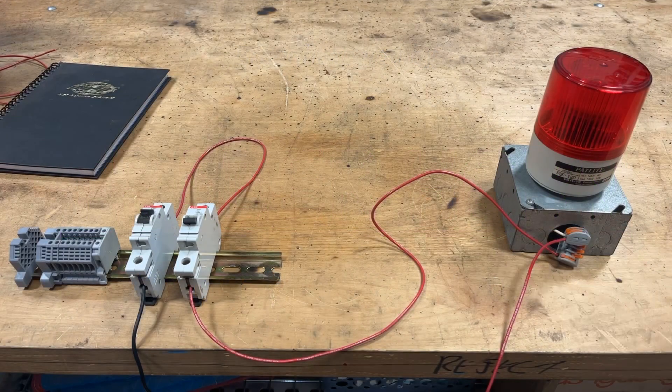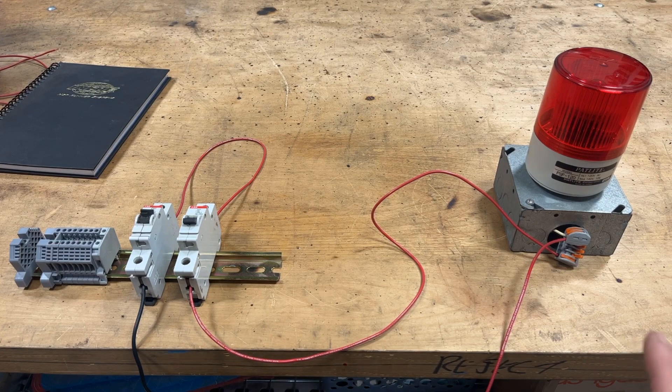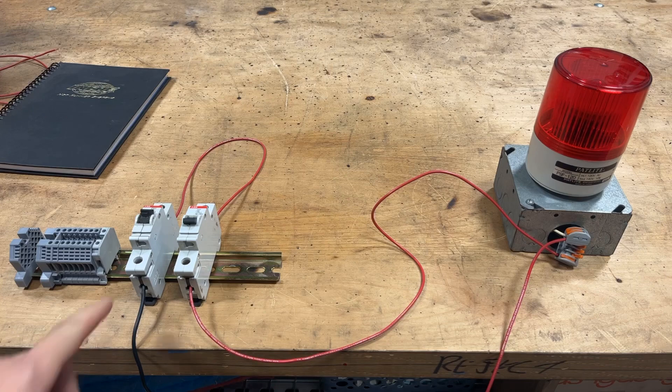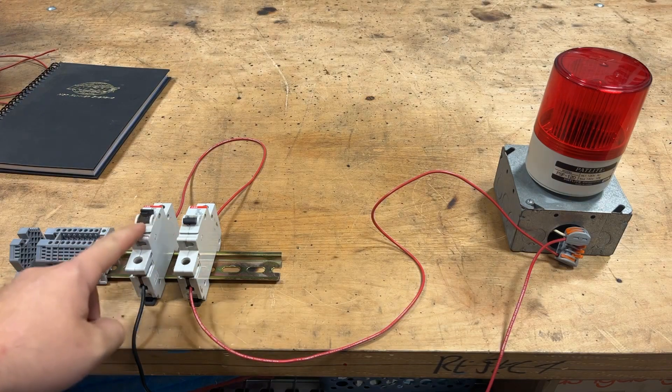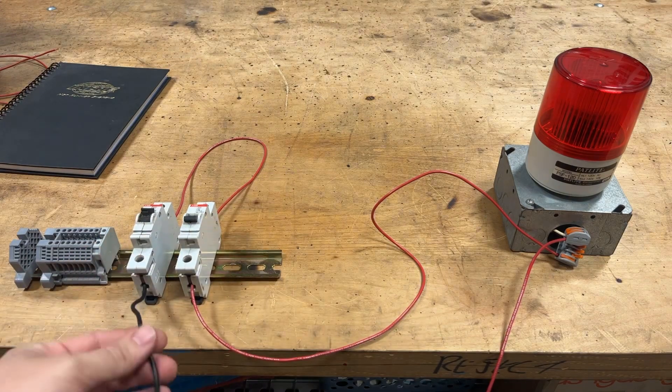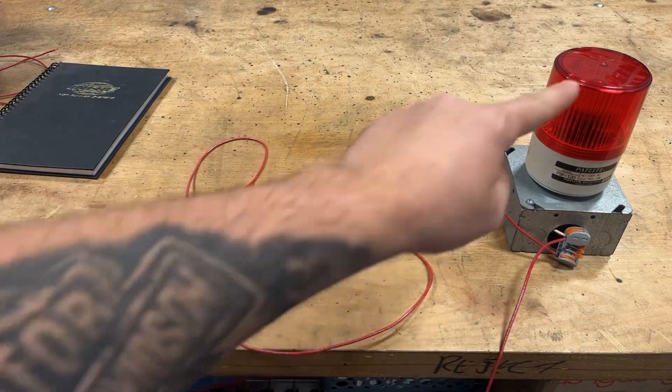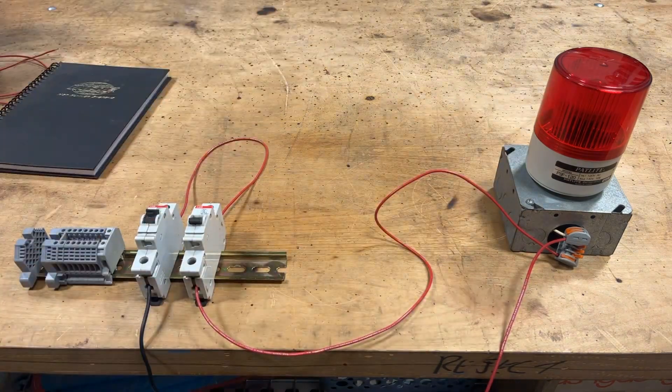Alright, so what we have here is a rough example of a series circuit. I know this doesn't look like much, but fundamentally, this is how it works. If you take a look over here, I've got two breakers wired in series. This is my main line in, this is my load line going out to our little blinky light. That's our load.